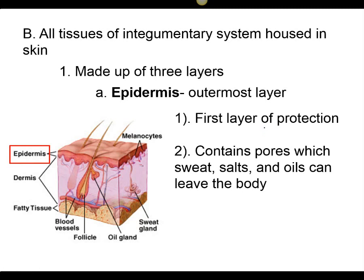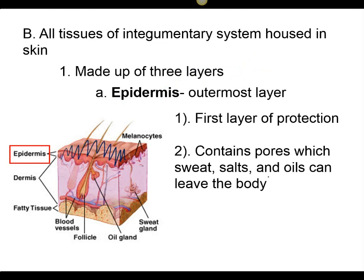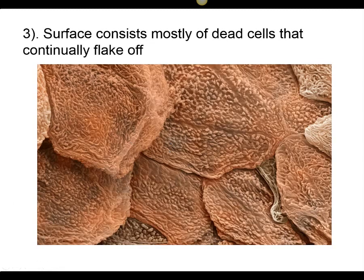Skin has two main layers and then a bottom layer which is mainly fat, so we can think of it as three layers. The skin itself has the epidermis and the dermis. Epi means above, so it's the top layer. The epidermis is the outermost layer — it contains pores that hair comes out of and pores that sweat comes out of. It's mainly dead skin cells. Every couple of weeks, we're getting a new top layer of skin, which helps protect us from the constant wear and tear.